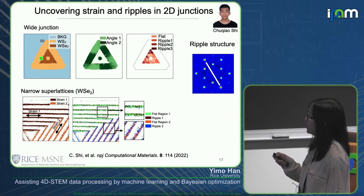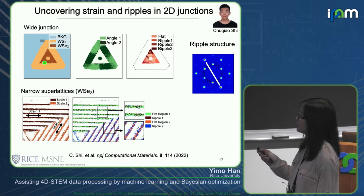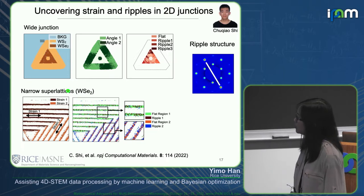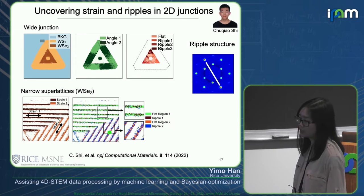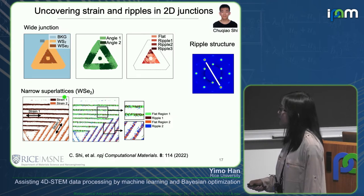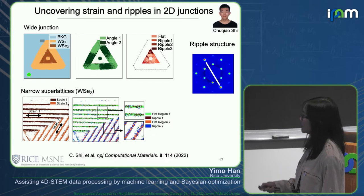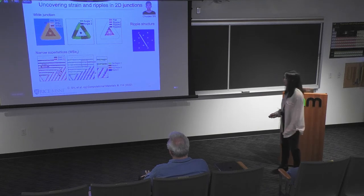I used my WS2/WSe2/WS2 dataset as the test case, and it worked very well. In the first clustering round, Chuchiao identified three distinct regions. In the second round, rotation appeared when clustering the WS2 area, and ripples appeared when clustering the WSe2 area. For the narrow superlattice sample, clustering WSe2 revealed strain, and further clustering revealed ripple structure — which was very minor because the lattice is mostly coherently connected. Essentially, Chuchiao showed me in about 10 minutes what I had spent my entire PhD working out. Machine learning is genuinely useful here.